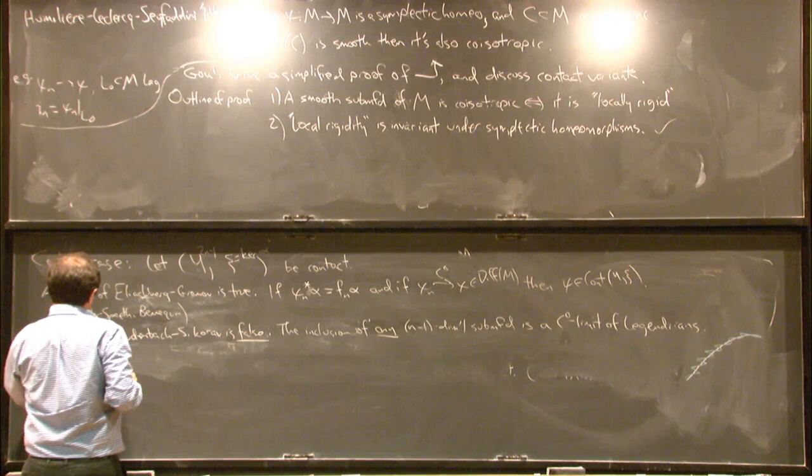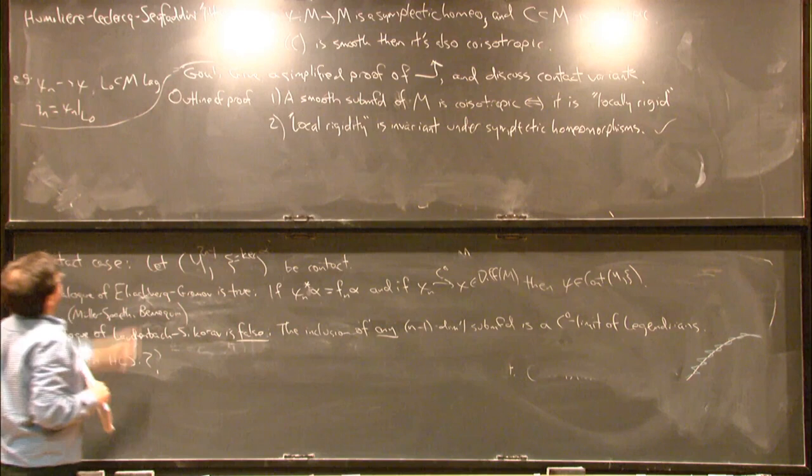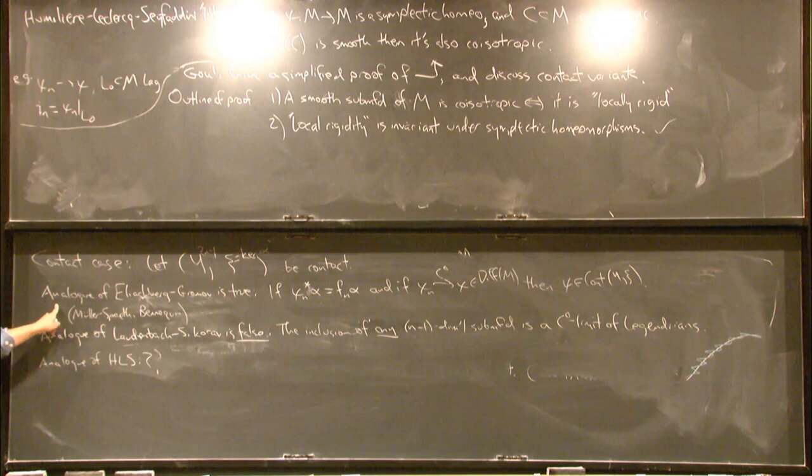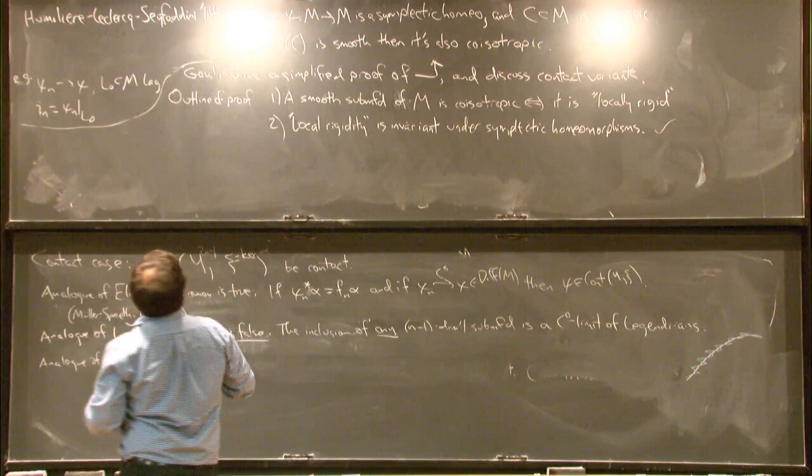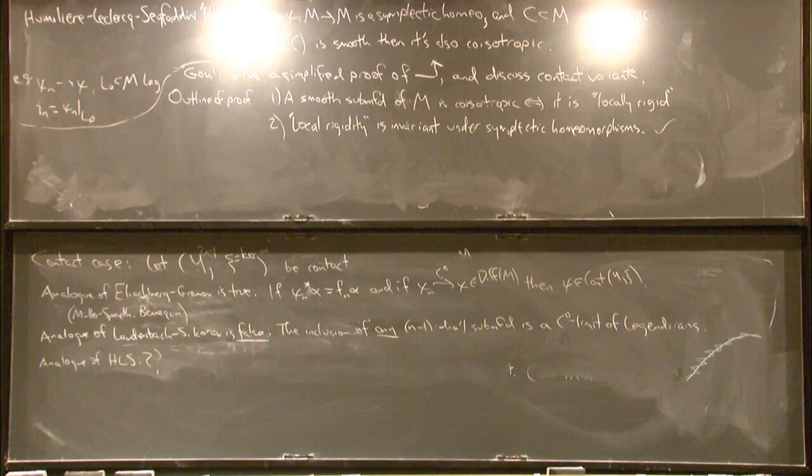So first of all, I have to say what co-isotropic means. If you want to say forget about co-isotropic, let's just focus on Legendrians — I think that's probably OK. But the general definition, that was explored by Yang Wang, is that a co-isotropic submanifold is co-isotropic if when you intersect it with the contact hyperplanes, you get a co-isotropic subspace of the symplectic vector space given by the contact hyperplanes. Note that the dimension of this intersection can vary with the point P.